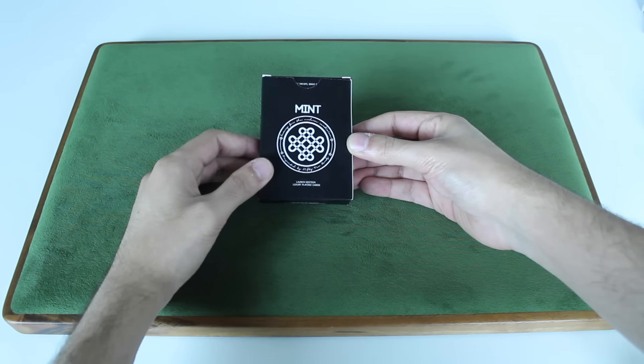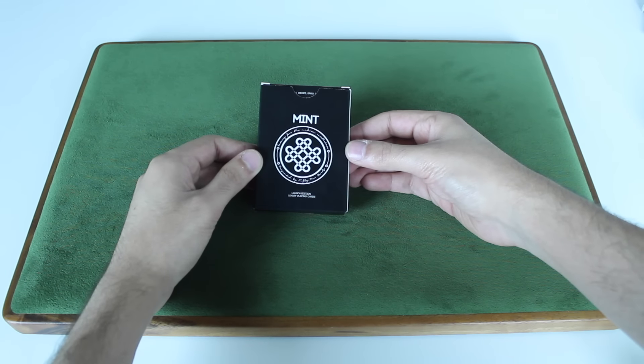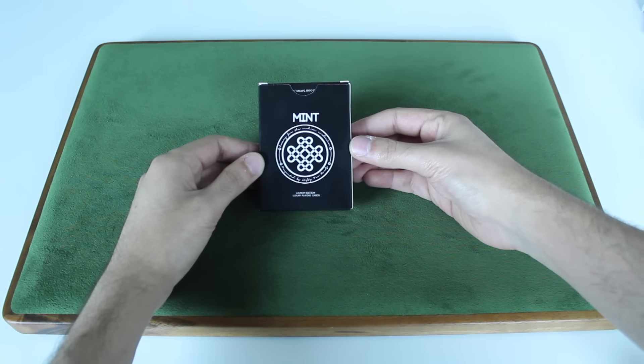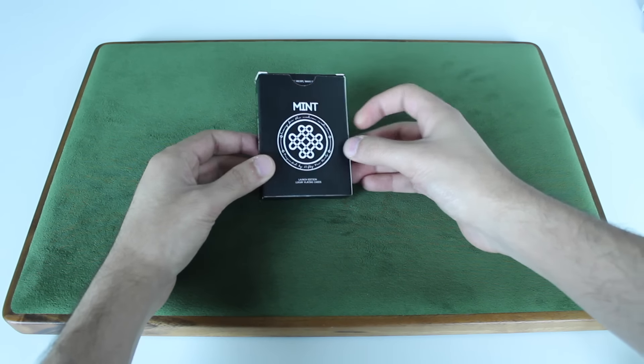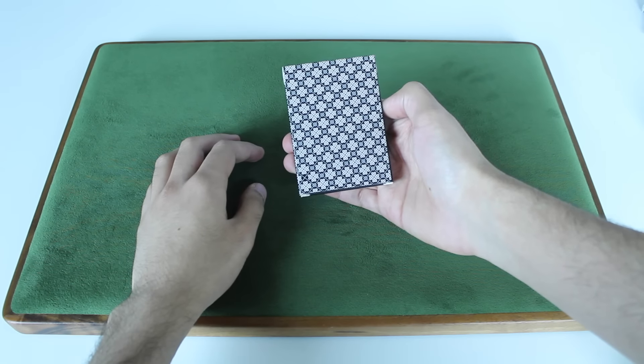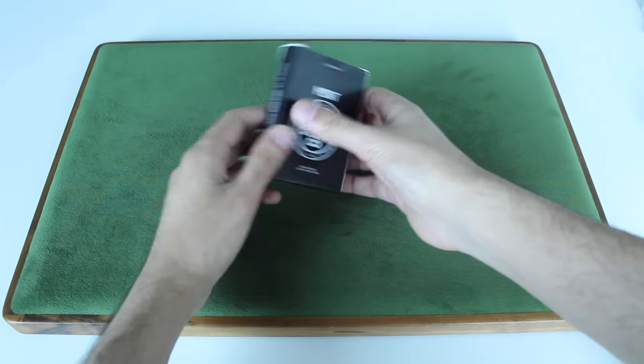Alright, but this right here will give you a good idea of the aesthetics of the deck, the design, and what it's going to look like. So this right here is the box. Very simple, very clean, minimal design on the front, and then on the back we have the back design pattern. So I think it's a really cool contrast between the front and the back of the box.